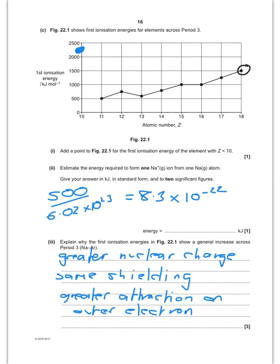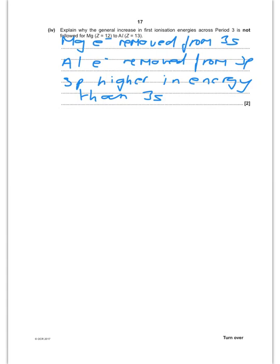The energy to form 1 Na plus ion from 1 Na atom. Well to form a mole takes 500 kilojoules. So I take that number, divide it by the number of atoms in a mole, which of course is Avogadro's number, and you get 8.3 times 10 to the minus 22 kilojoules. Why do I see this general increase across period 3? Well as you go across the period you've got a greater nuclear attraction, the same shielding because the electrons are in the same shell, and therefore there's a greater attraction on the outer electron from the nucleus. Why does that general increase not followed for magnesium and aluminium? Well because for magnesium the electron is removed from the 3S subshell. For aluminium the electrons removed from the 3P subshell. You remember that the 3P is higher energy than the 3S, and therefore easier to remove.